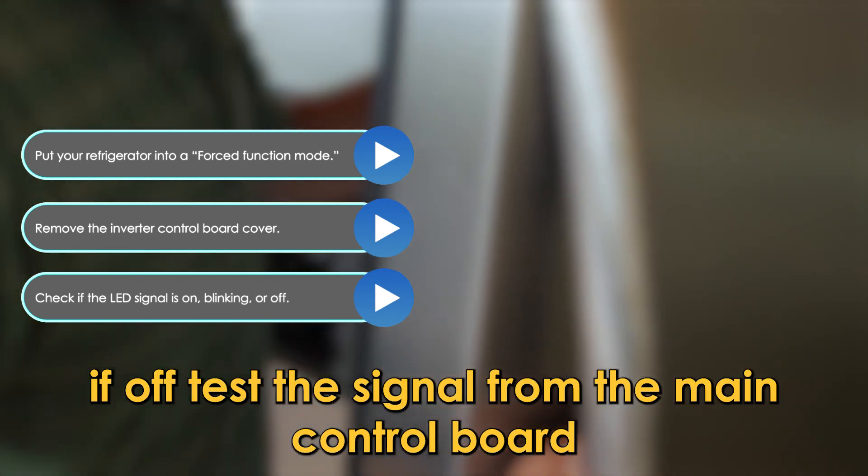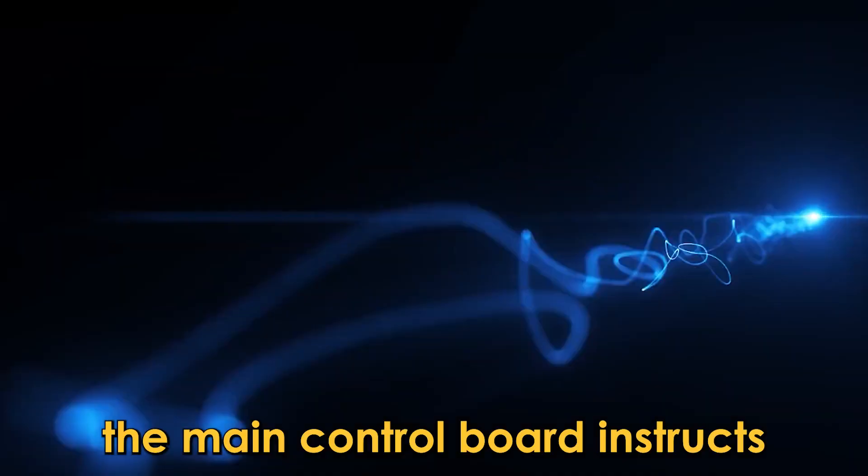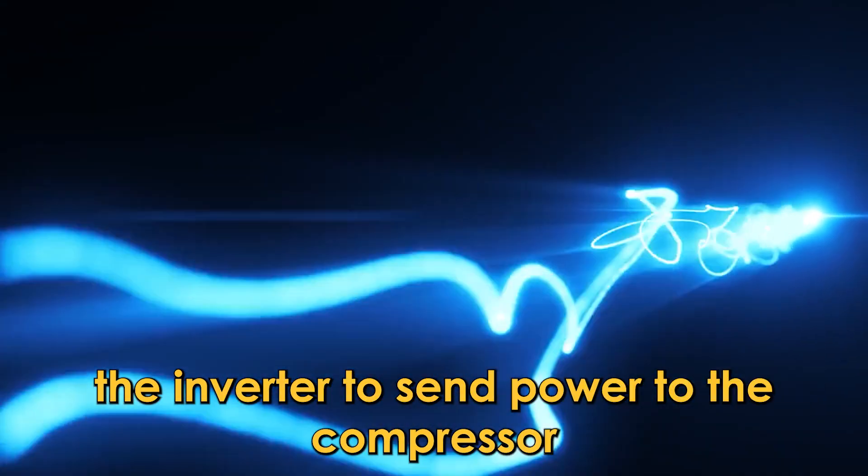If off, test the signal from the main control board. The main control board instructs the inverter to send power to the compressor.